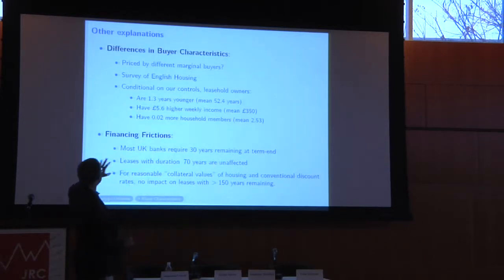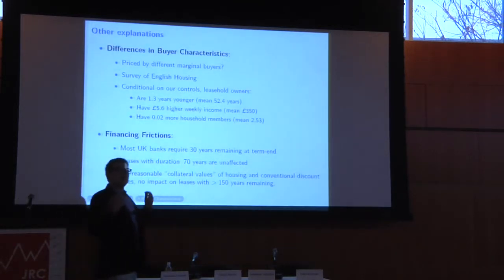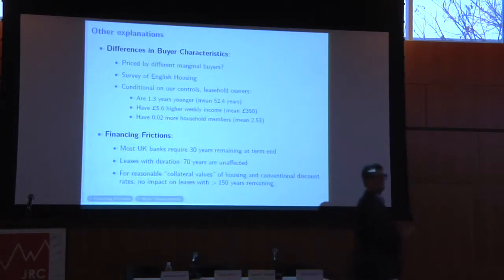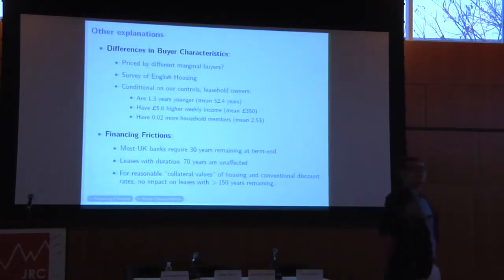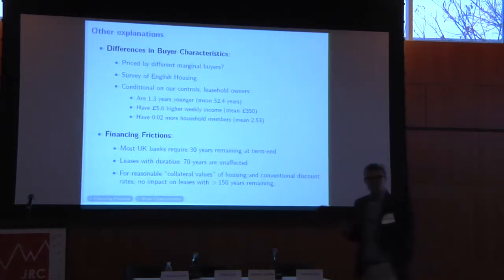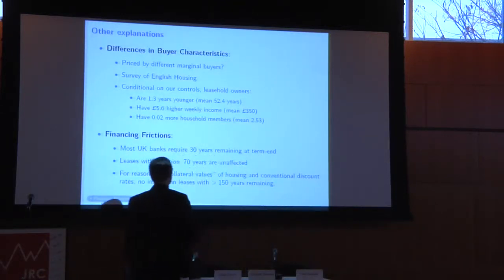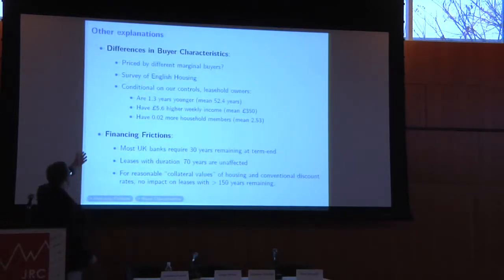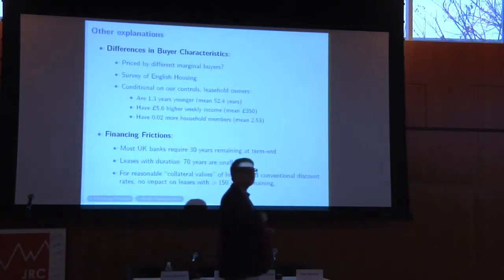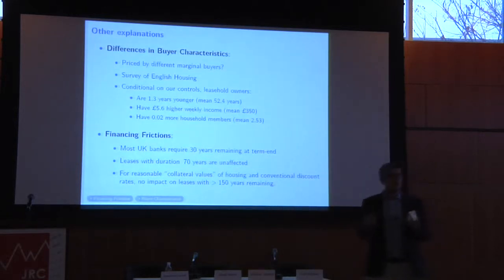Other possible explanations we address: you might think there are different buyer types for freeholds versus leaseholds. For instance, maybe freeholds are just bought by people without children or without a bequest motive. When we look at the data, however, conditional on property type, the characteristics of freehold and leasehold owners are almost identical — the difference in weekly wage is only about five pounds, and household size differs by just 0.02 members.